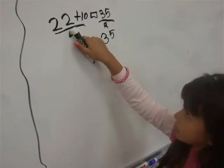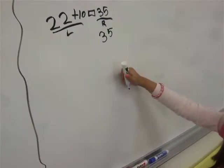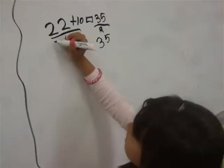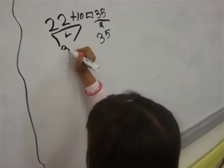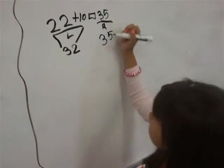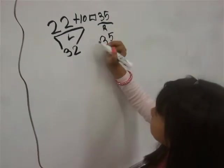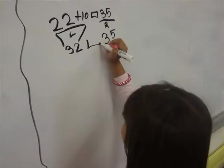Now we are going to do 22 plus 10. And 22 plus 10? 22 plus 10 is 32. Then we put the box down here in the middle.